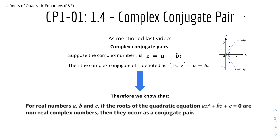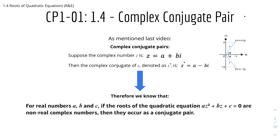We'll get started with Complex Conjugate Pair. As mentioned in the last few videos, Complex Conjugate Pairs come in — they are basically complex conjugates. So if the complex number z equals a plus bi, that means the conjugate of z will be z* equals a minus bi, where the sign before the imaginary unit is flipped. Using this logic, we know that for real numbers a, b, and c, if the roots of the quadratic equation az² + bz + c = 0 are non-real complex numbers, then they occur as a conjugate pair.